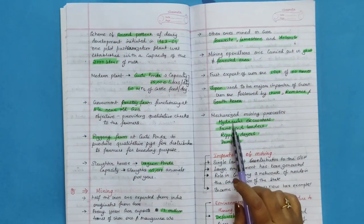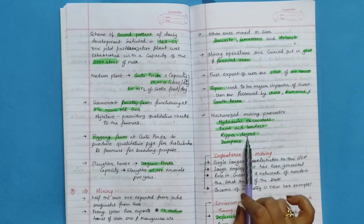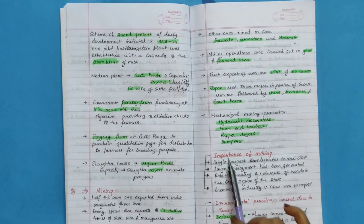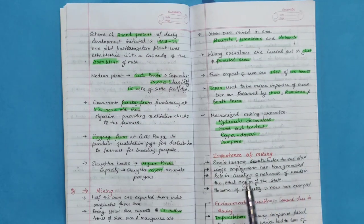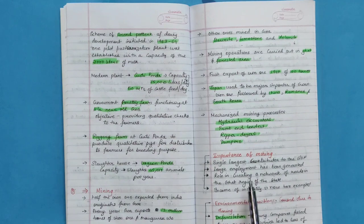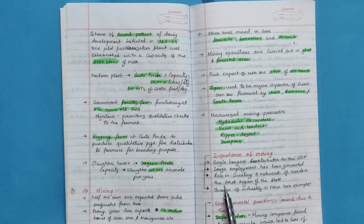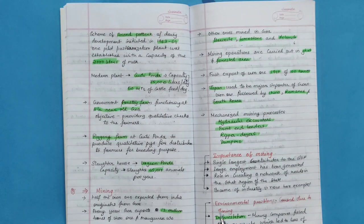Mechanized mining processes like hydraulics, excavators, front-end loaders, rippers, dozers, dumpers. Importance of mining: single largest contributor to the GDP, large employment has been generated, role in creating a network of roads in the ghat region of the state. Income of industry is now tax exempted.